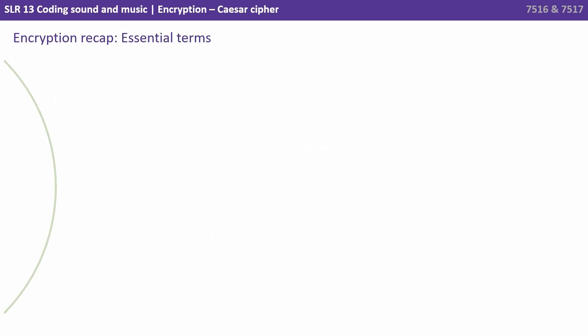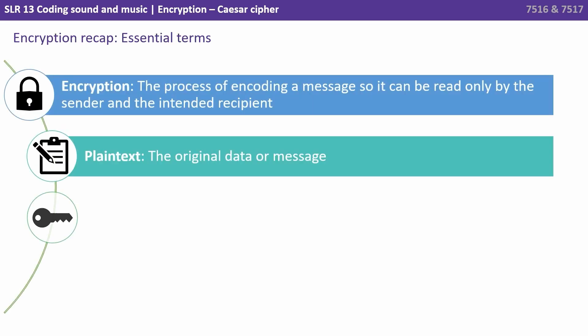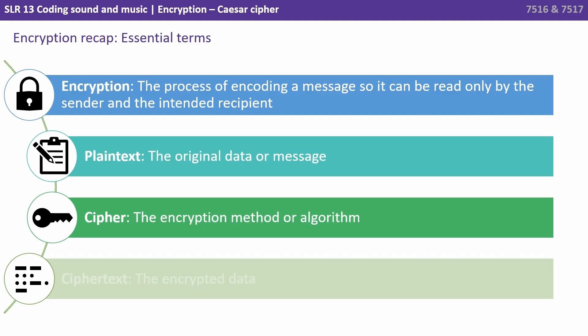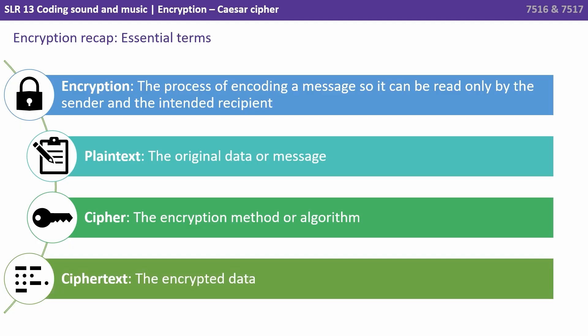So let's look at some encryption term examples. Encryption: the process of encoding a message so it can be read only by the sender and the intended recipient. Plain text: the original data or message. Cipher: the encryption method or algorithm. Cipher text: the encrypted data.